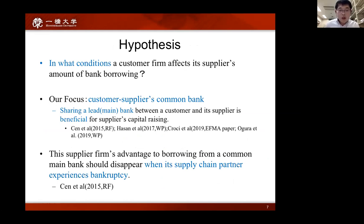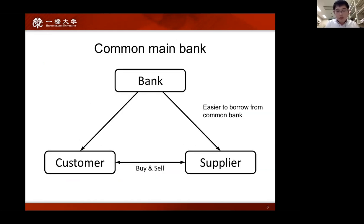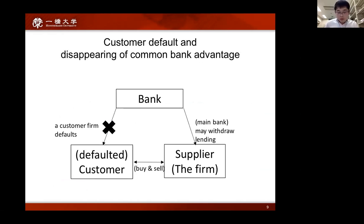First, we consider under what conditions a customer's bankruptcy has a negative impact on the supplier's bank loans. Our hypothesis is based on the common bank literature. Recent studies show that it is easier for suppliers to borrow when customers and suppliers share a common main bank. A customer and supplier sharing the same lead bank means that the bankruptcy of a customer represents a disappearance of the advantage of having a common main bank, which may reduce the supplier's bank borrowing.